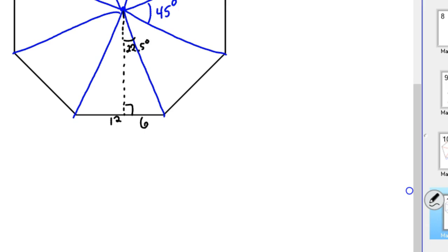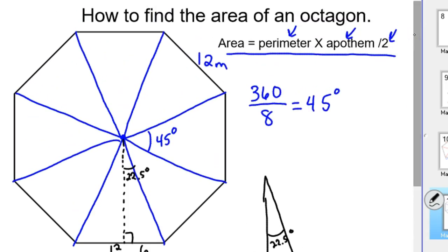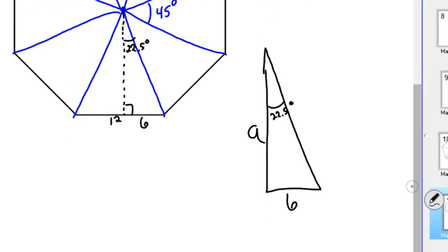So we can go ahead, I'm going to pull that triangle out. So this angle is 22.5 degrees. This angle is 6. And the dotted line, that's the height of the triangle, which is also called that apothem that we need. So right here is the height of that triangle. To find that, we're going to have to use trigonometry.